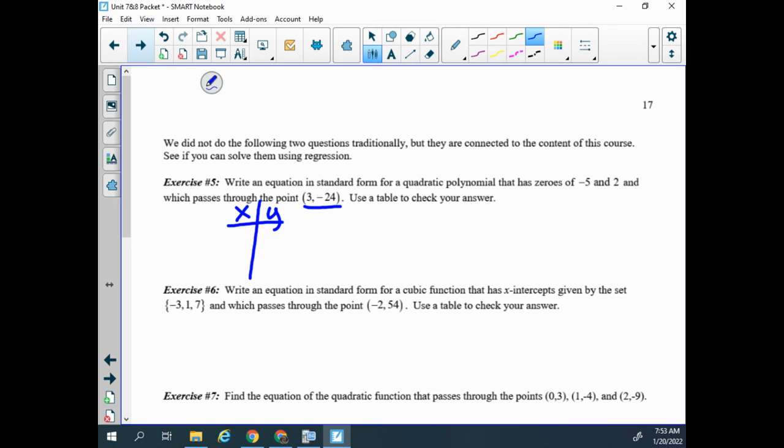So when I'm using regression, I want to translate this information into points that I can put into a table. So I have the point (-5, 0), right? A zero means that we are in a graph on the x-axis. So the x-value is negative 5, the y-value is 0. So corresponding to the 2 is (2, 0). And then the point that I'm directly given is (3, -24).